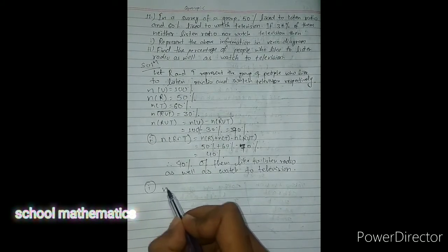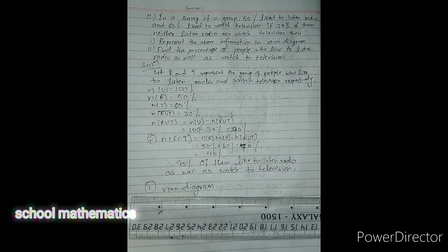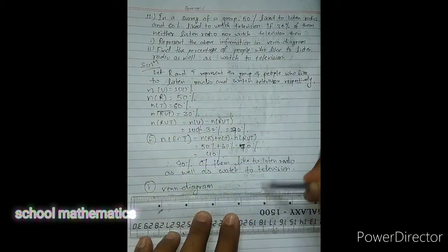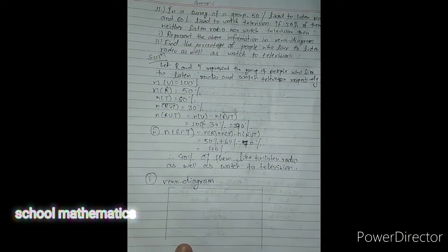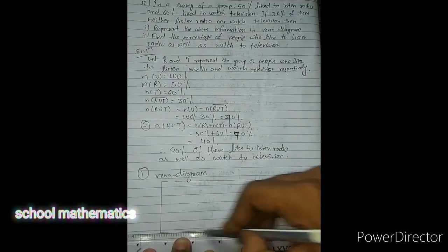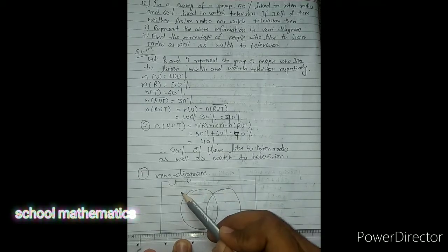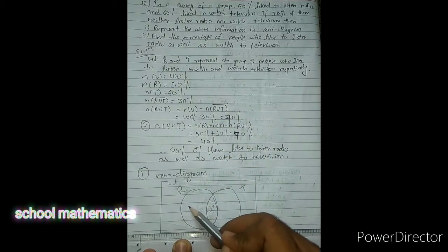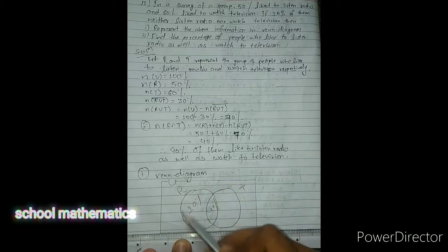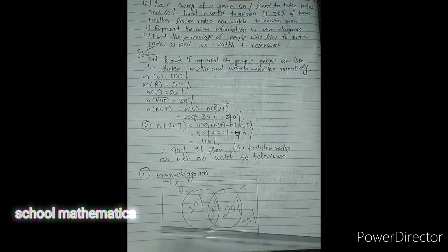Now we have to represent this in a Venn diagram. It is better to use a compass and make it neat and clean. The intersection is 40%. R is given as 50, so 50 minus 40 is only 10% for radio only. T is 60, so 60 minus 40 is 20% for TV only. That gives us 10 plus 40 plus 20 equals 70, and the remaining 30% is the complement — outside the circles.